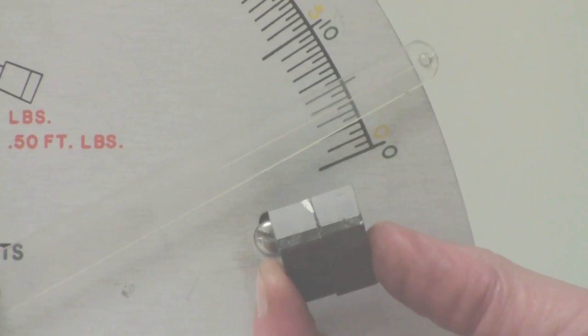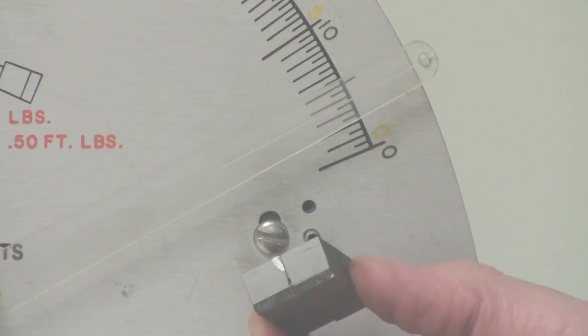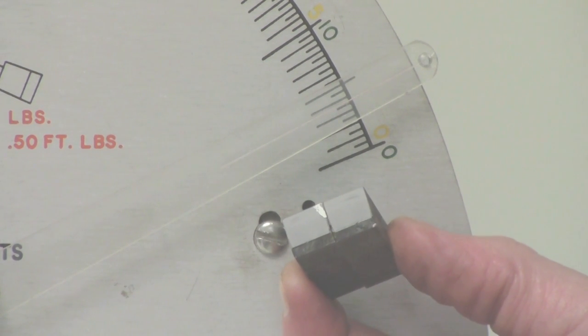Here we have an example of a brittle failure. And you can see how the failure surface looks nice and flat, like it's almost been cut with a knife. And you notice that it absorbed a lot less energy. So we're reading around two foot pounds of energy absorbed.